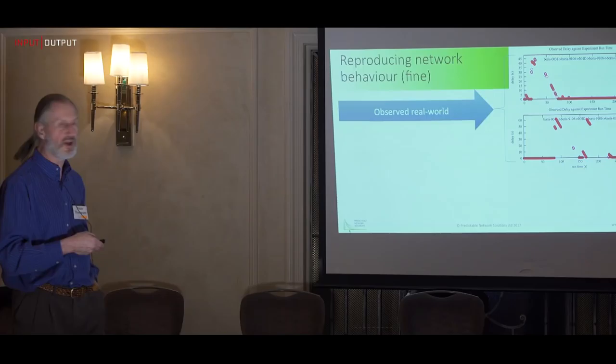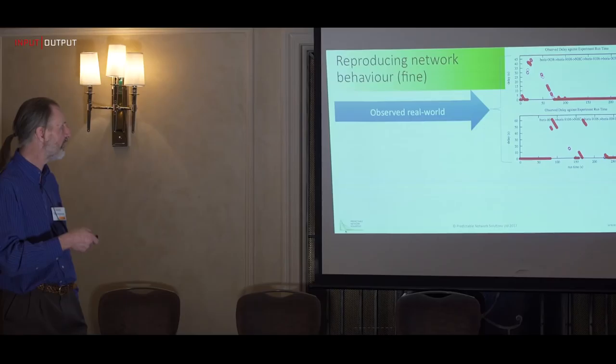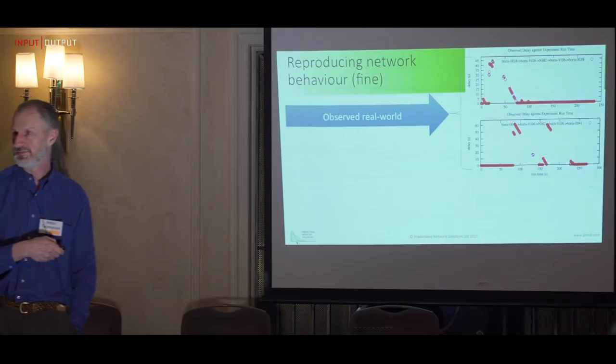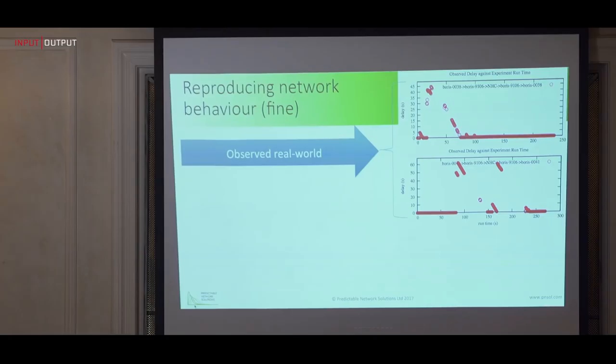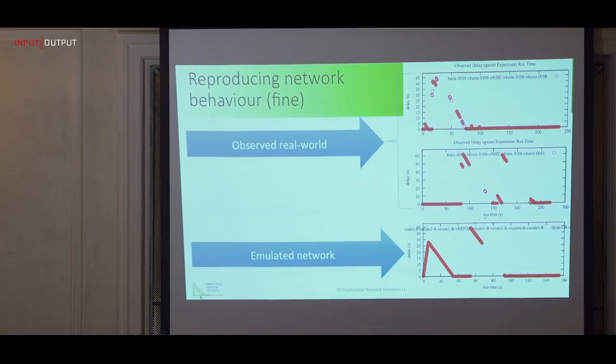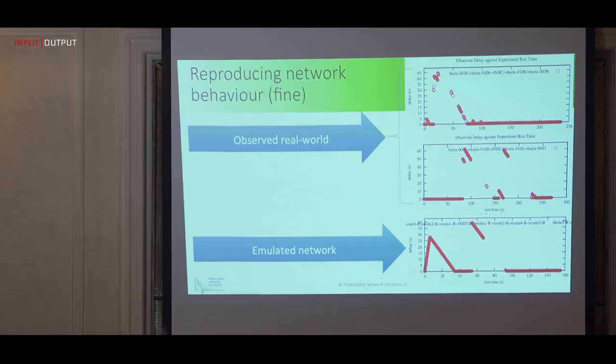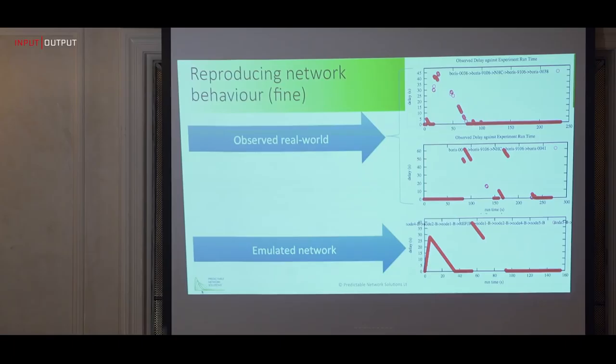Here's an example of some fine-grained behavior. We saw pictures like this before — this is the kind of behavior you can see on a network. This is measured in seconds of time, and these are seconds of delay. We can come up with theories about what's going on and construct a model that reproduces that kind of behavior, then run traffic through it. This demonstrates that the system is sufficiently flexible that it can reproduce a whole range of network behaviors that we actually see in practice — so it's realistic from that point of view.